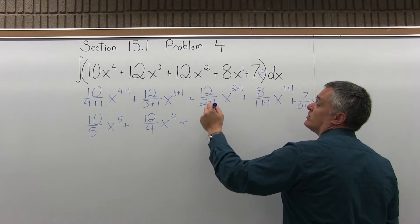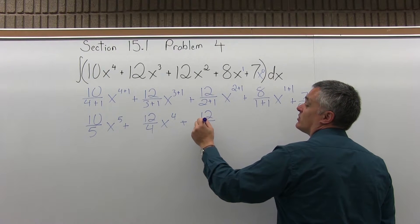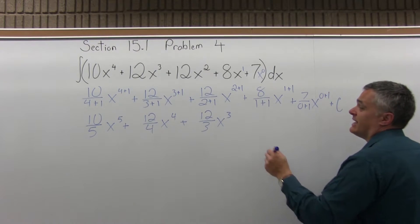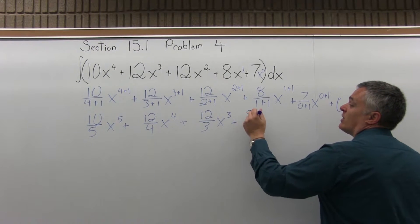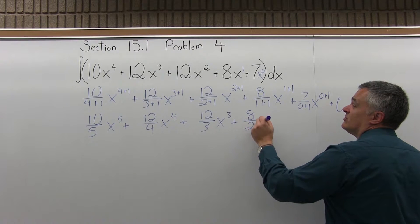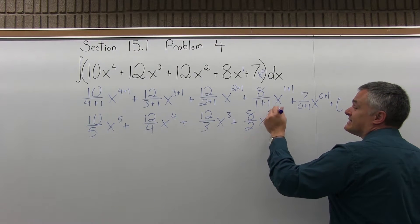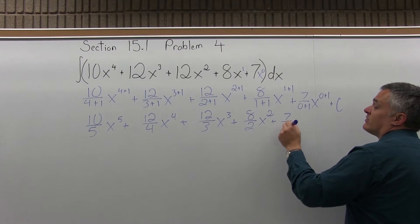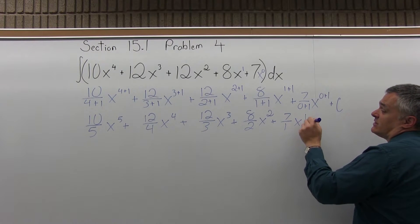Then the next piece, 12 over 2 plus 1 will become 12 over 3, and the x to the 2 plus 1 becomes x to the 3rd. The next piece, 8 over 1 plus 1 becomes 8 over 2, x to the 1 plus 1 is x to the 2nd. Then the 7 over 0 plus 1 is 7 over 1, x to the 0 plus 1 is x to the 1st.